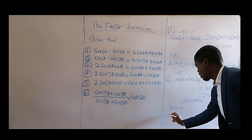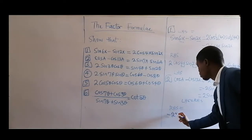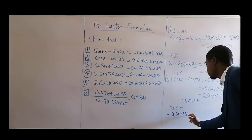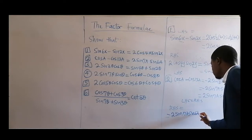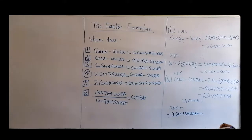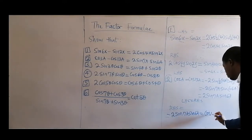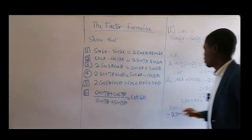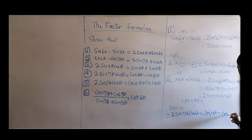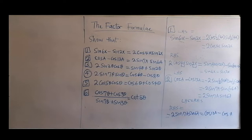From the right-hand side you then have minus 2sin(7a)sin(6a), and that will be equal to cos(13a) minus cos(a). That is the format it should be if you are starting from the right-hand side.